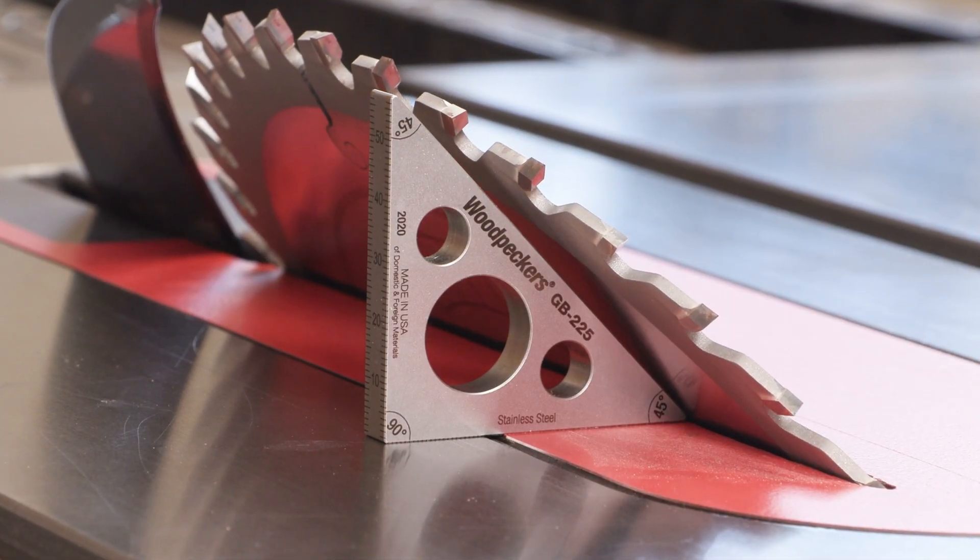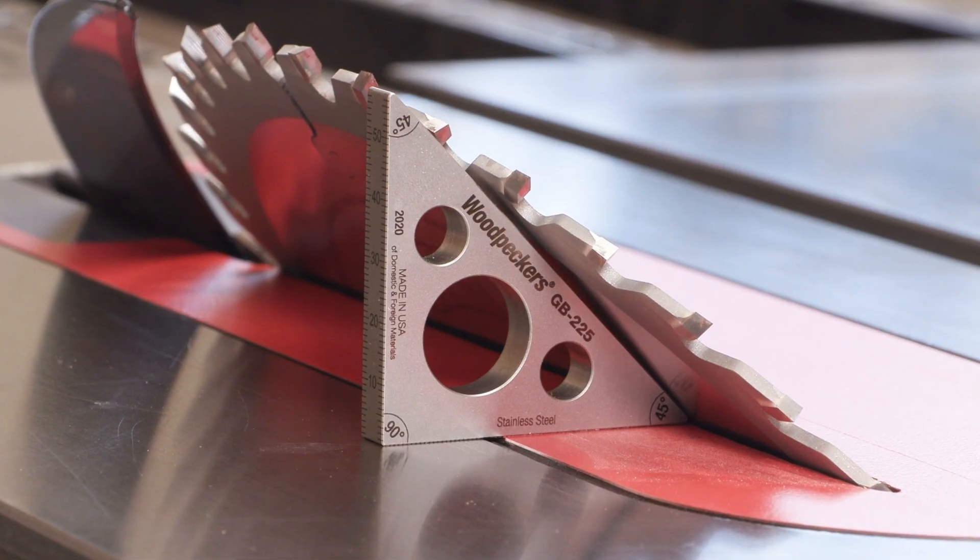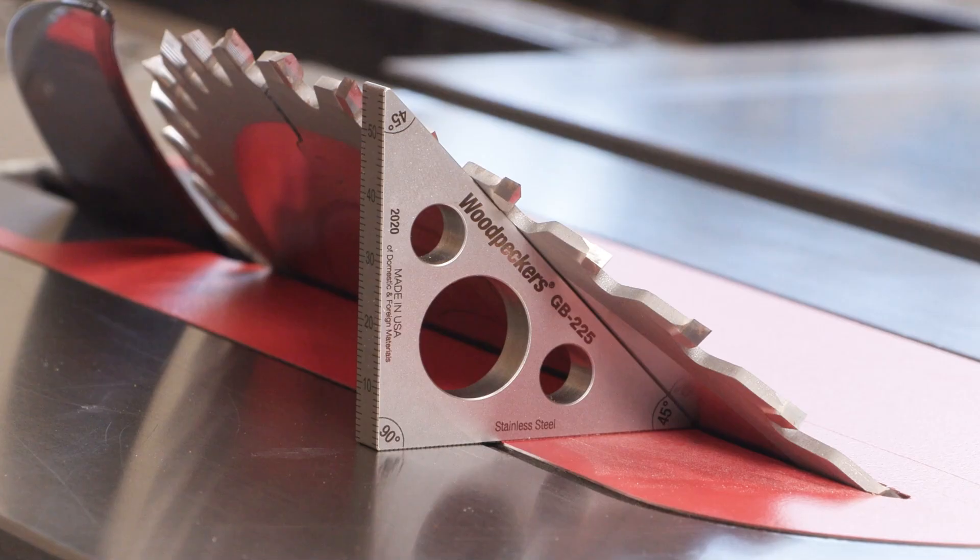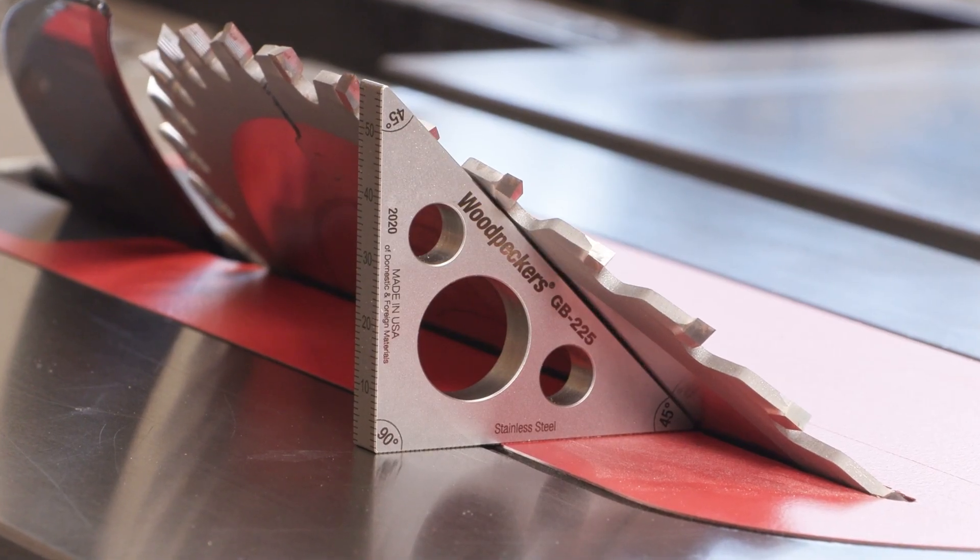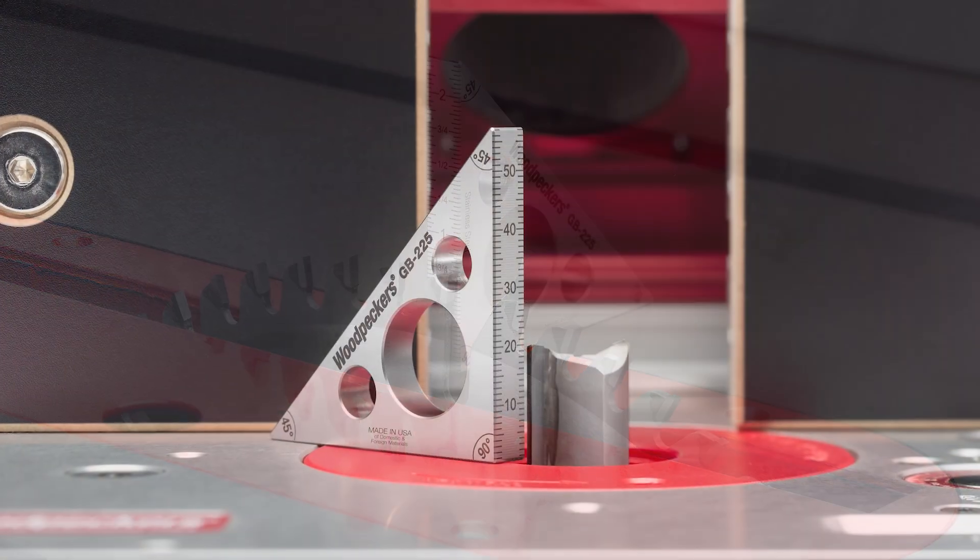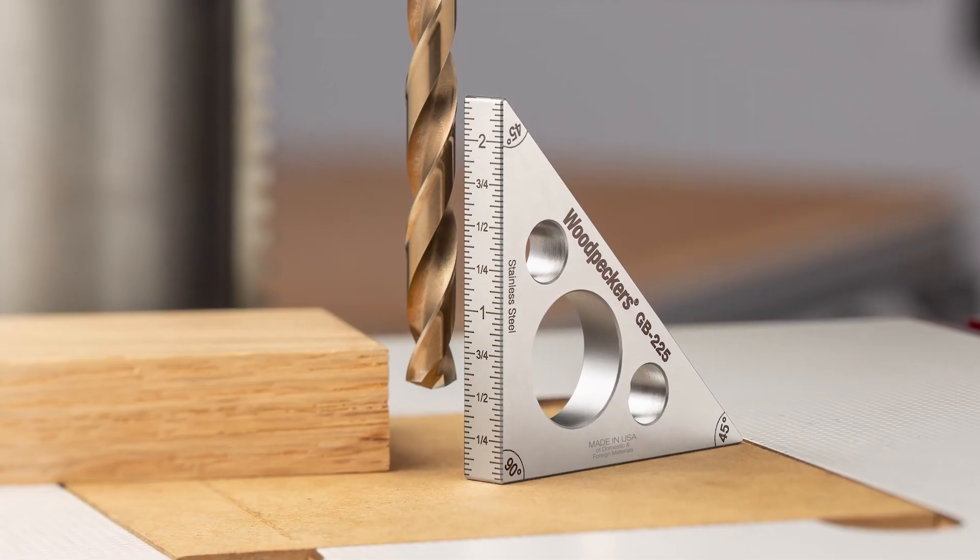Built with perfect 45 and 90 degree angles, the GB225 also features laser engraved scales on both edges to precisely set the depth of cut on a saw blade, router bit, or drill press.